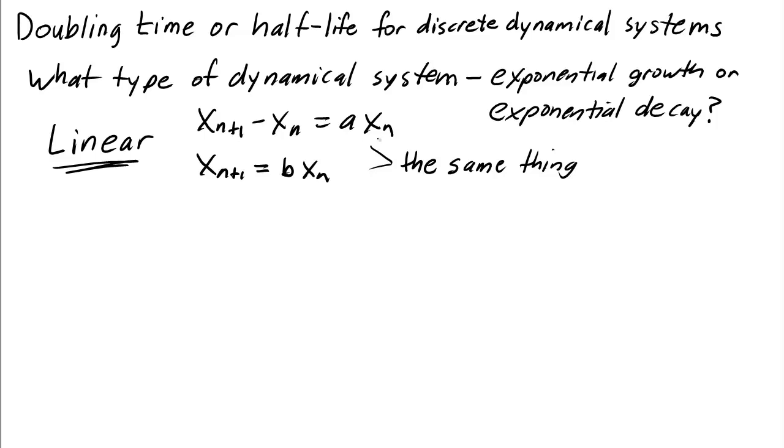If you add xn to both sides of the first equation, you'll get a+1 times xn, so really b is the same thing as a+1.